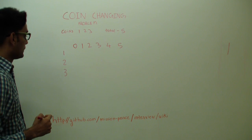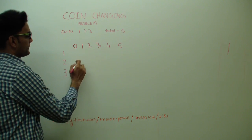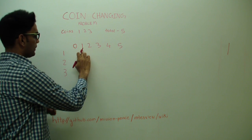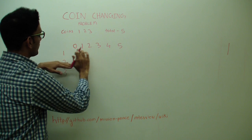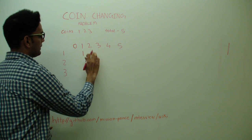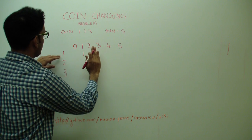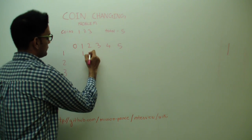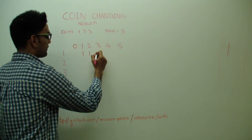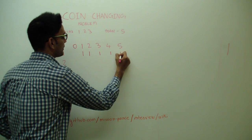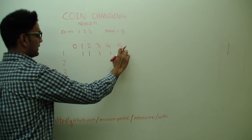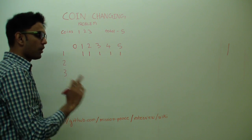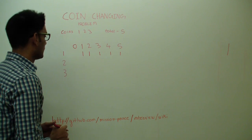So now we'll start filling the table. We ask ourselves: if we had a total of 1 and just the coin of denomination 1, how many different ways can we get 1 from 1? Just 1 way. Similarly, to get 2 using only coin 1 there's 1 way (1+1), and for 3, 4, and 5 it's also 1 each. So if we have a total of 5 and just one coin of denomination 1, there's only 1 way — five 1's.